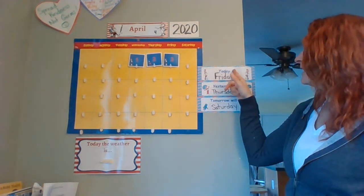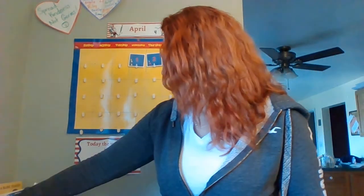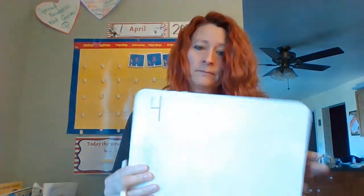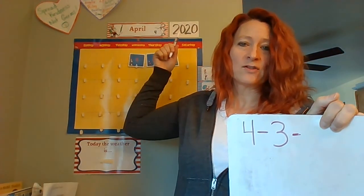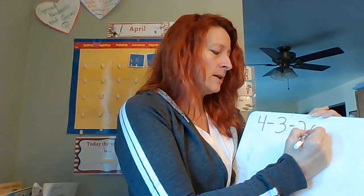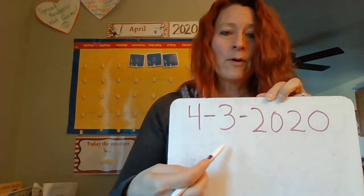All right. Today is Friday, April 3rd, 2020. I'm going to get my whiteboard out and we are going to write the short date. The number of the month was a four, so we are going to write a four. Then we're going to put a dash. We know that we are in the third day of the month. We're going to put another dash. And the year is 2020, so we're going to write 2020. And there is our short date — 4-3-2020.